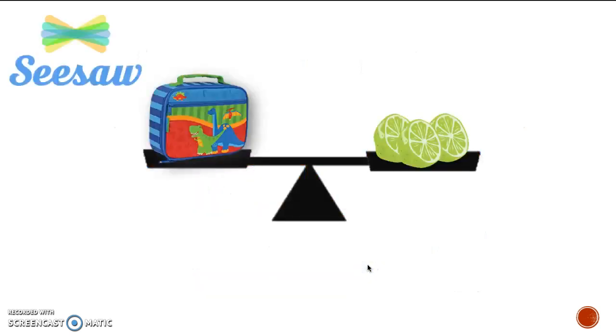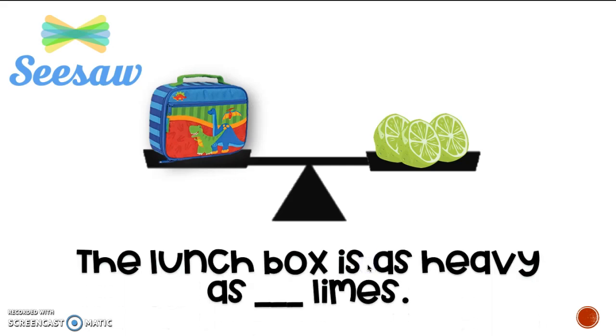Friends, now I want you to show me what you've learned. We're going to go ahead and we have a lunchbox on one side and some limes on the other. I want you to finish this sentence for me and then send it to me in Seesaw. Now, the lunchbox is as heavy as blank limes. So, fill in that blank with the number of limes that makes it even on the balance scale. Come on, friends.